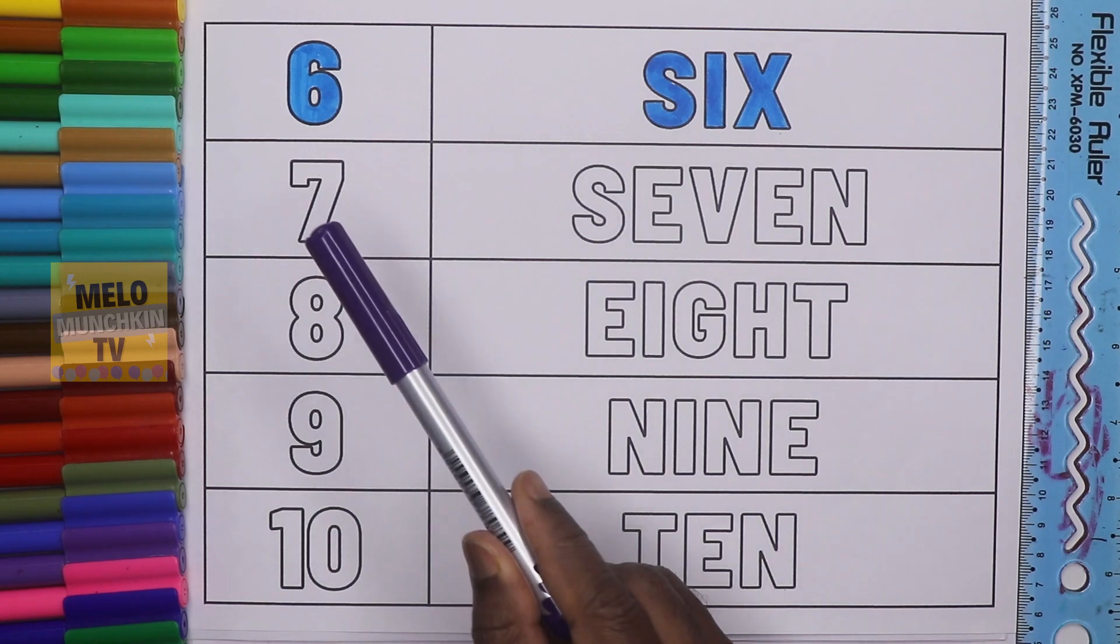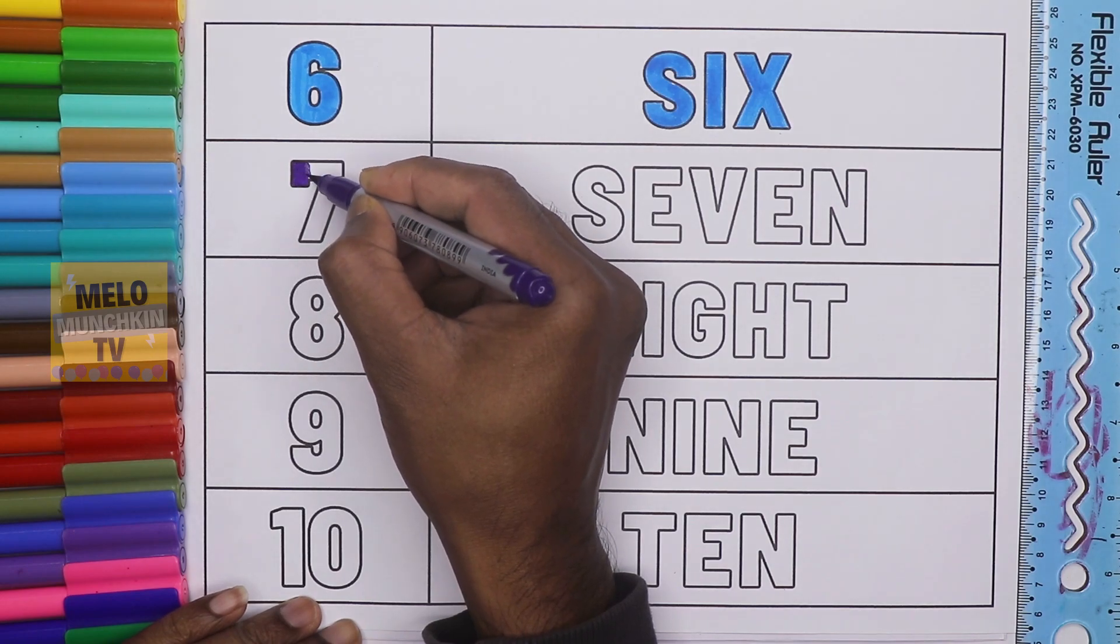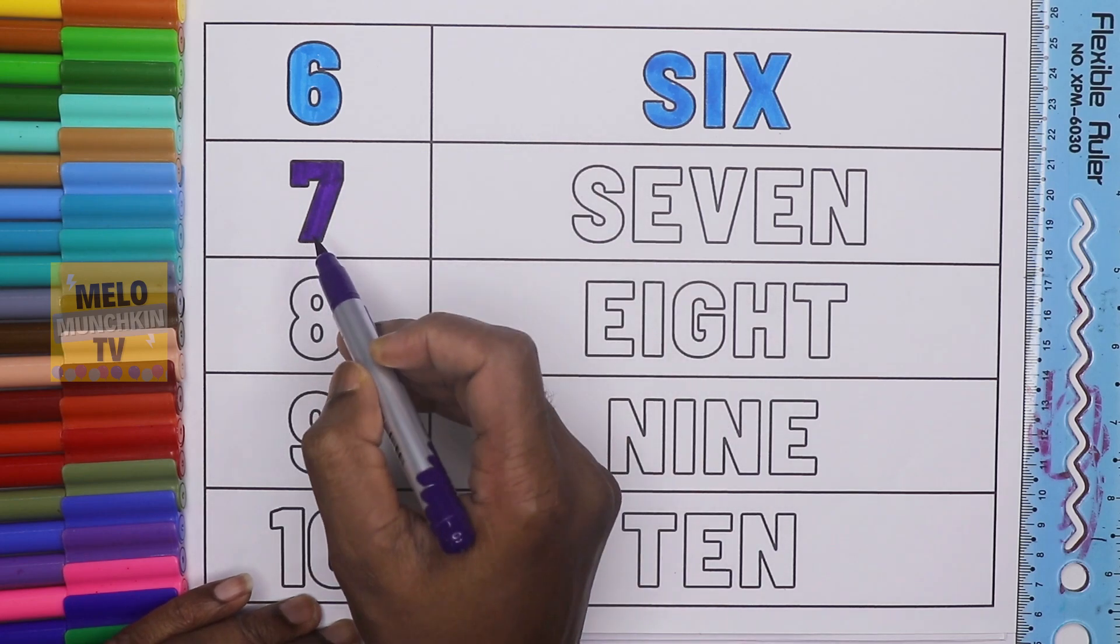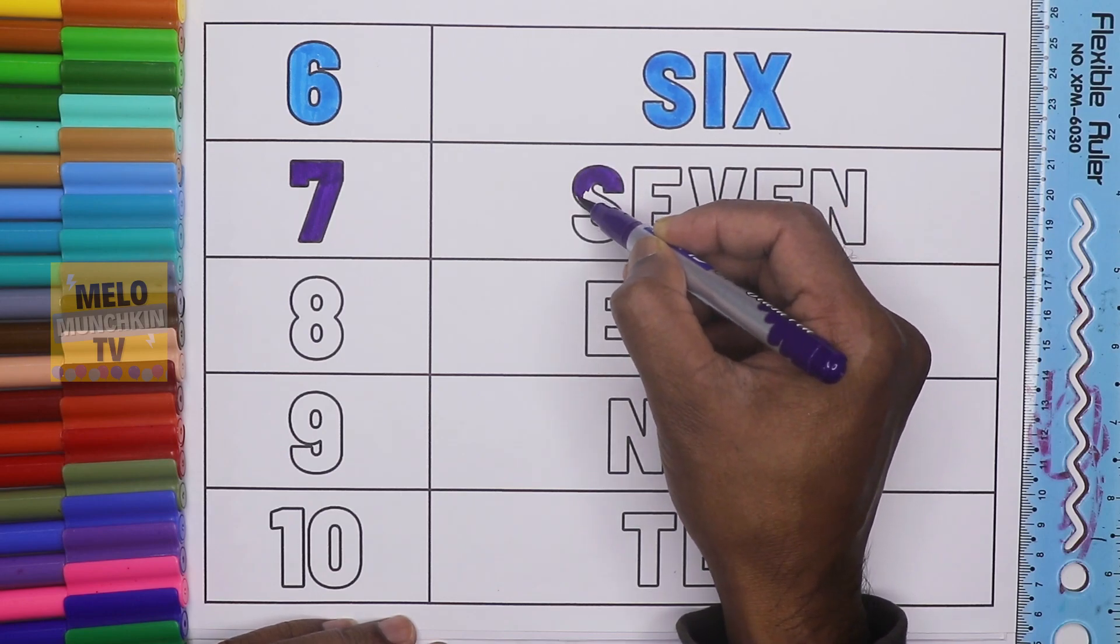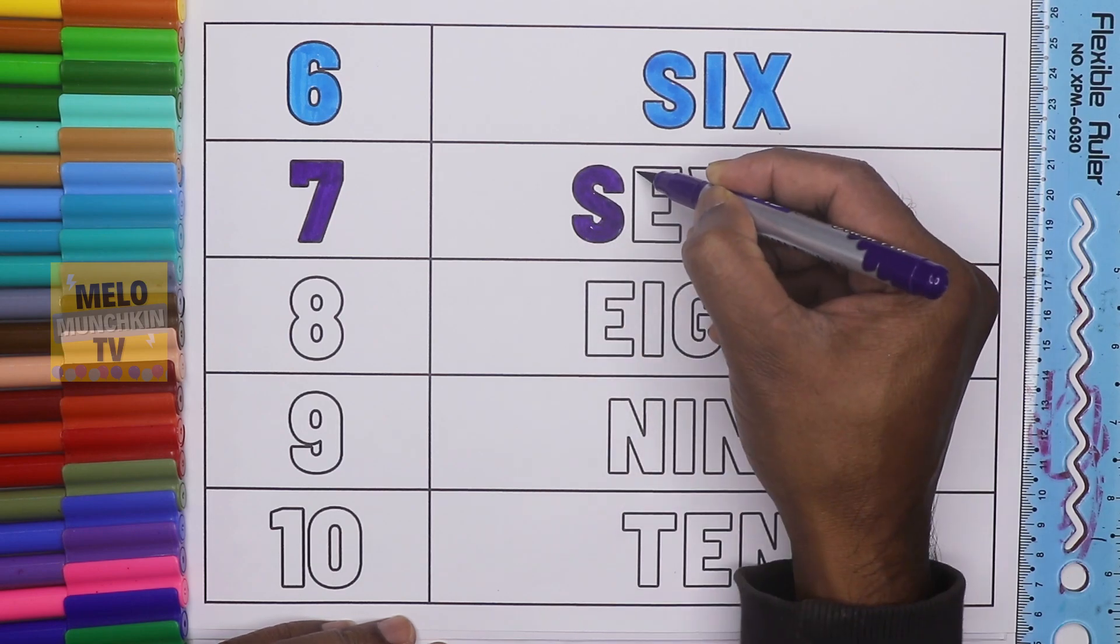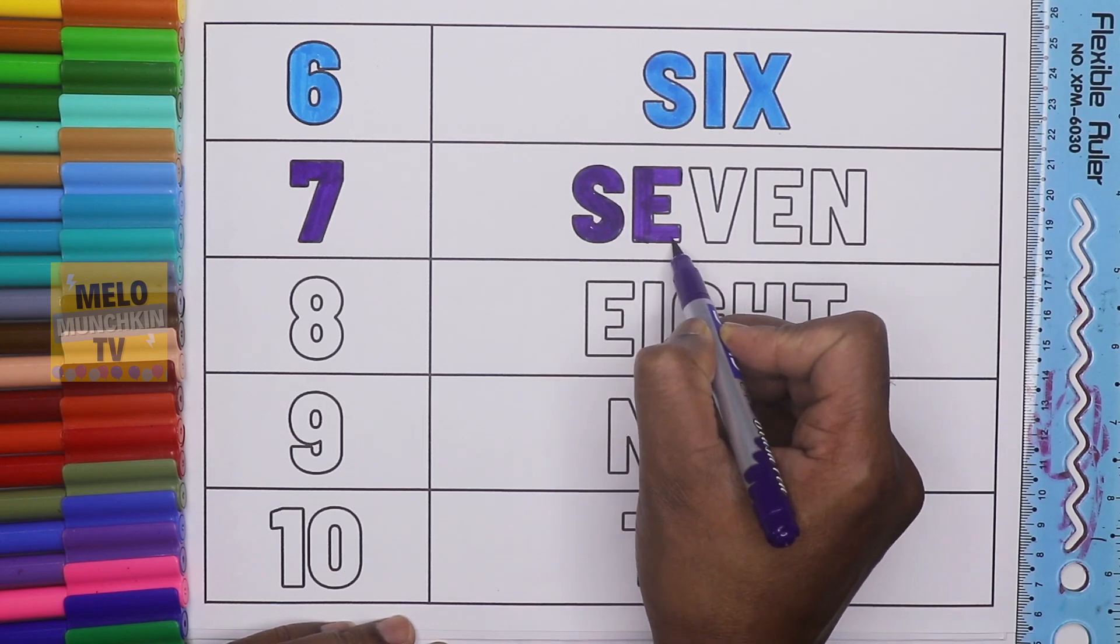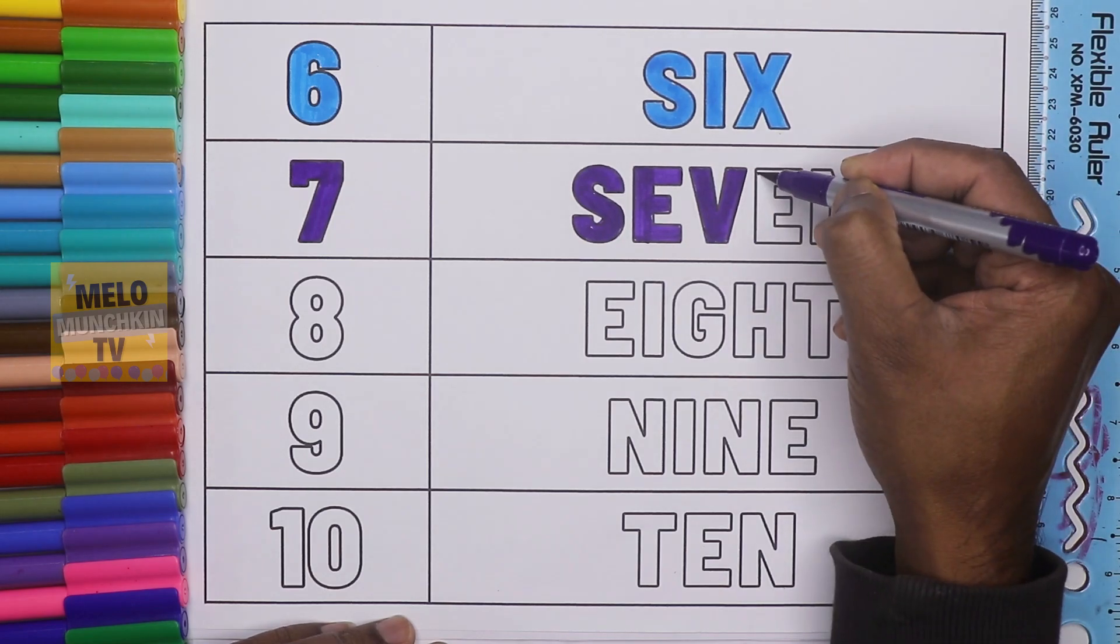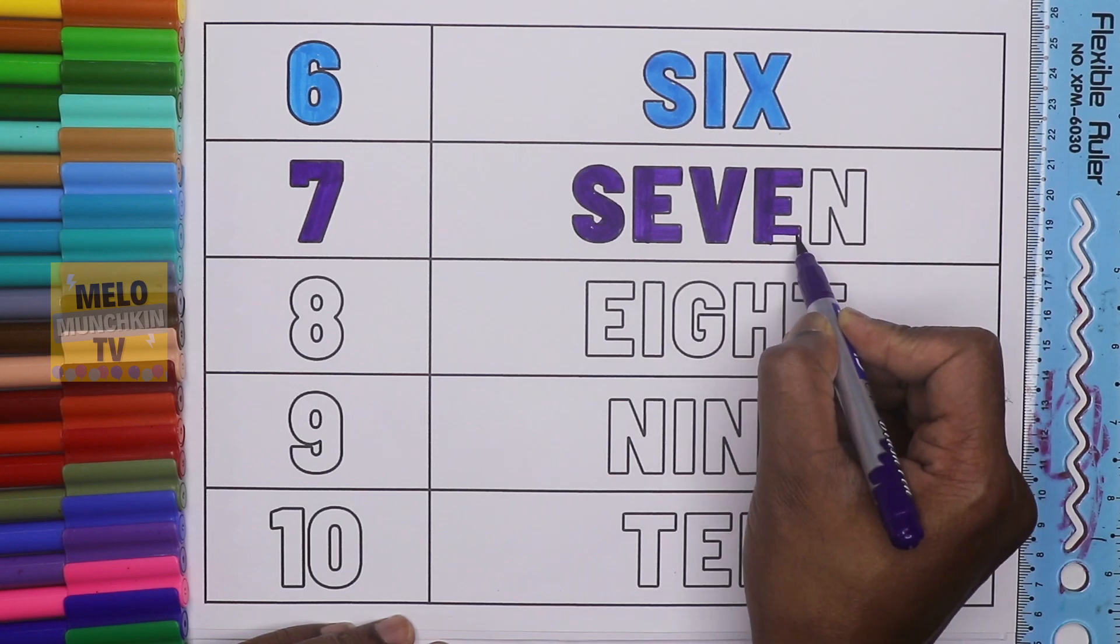Okay, next I'll take purple color to color number 7. This is number 7. So this is number 7. What is the spelling of 7? S-E-V-E-N.